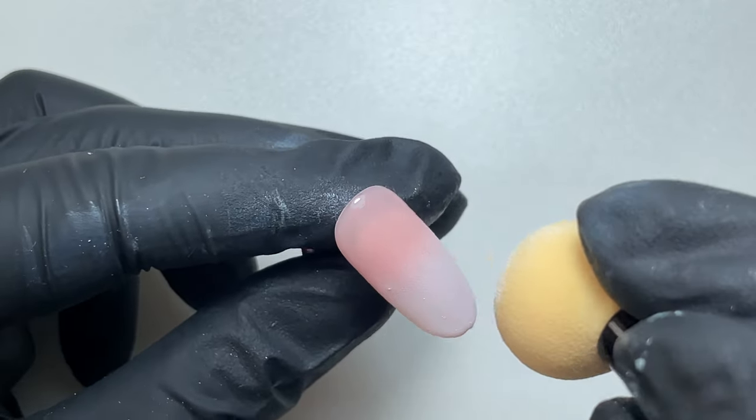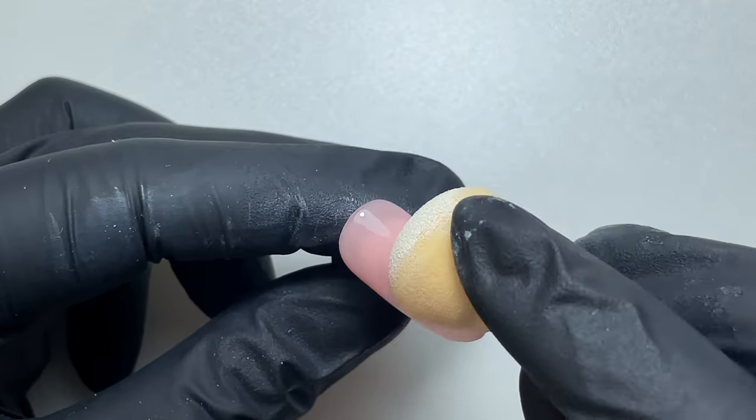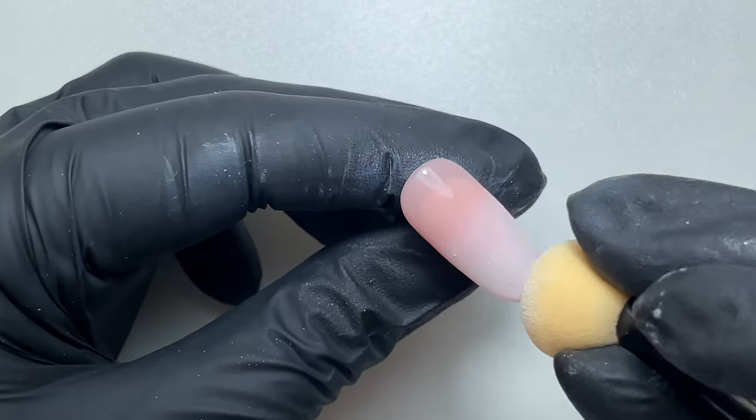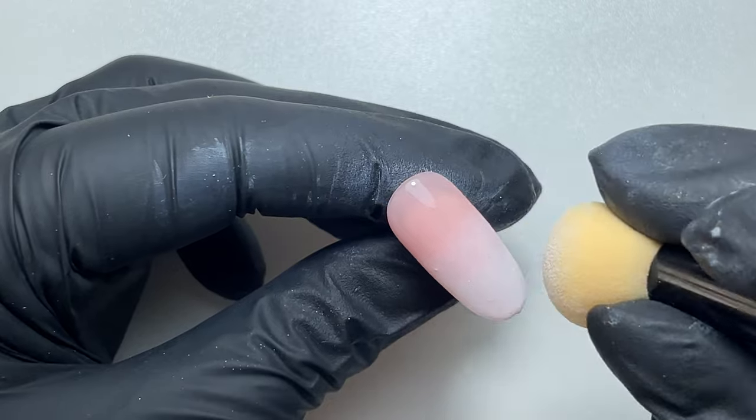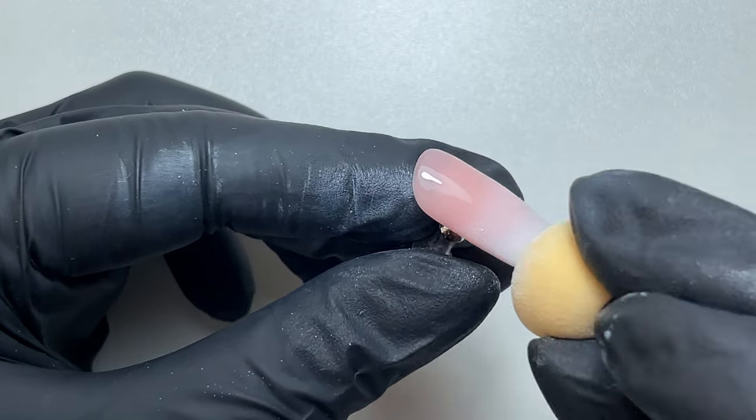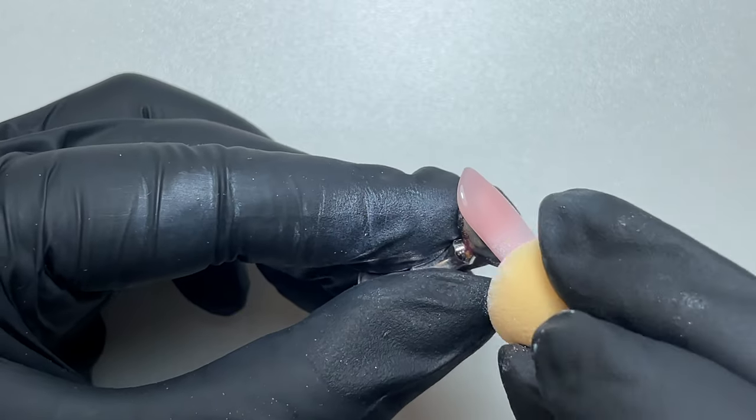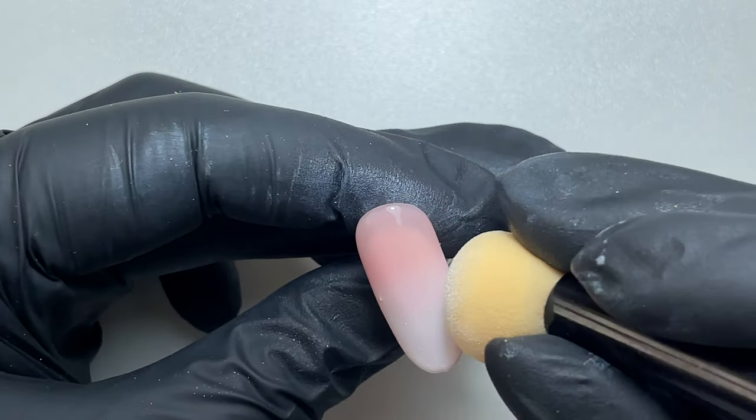If you're blending and there's a bit too much product, then just turn your sponge to an area that doesn't have as much product, just to blend it out a bit more. Then I've cured that for another 30 seconds and I'm adding a bit more white to the bottom, blending it up still but more of a focus towards the tip of the nail.